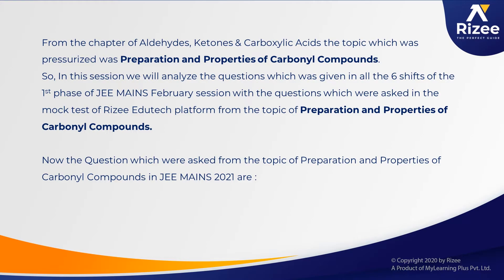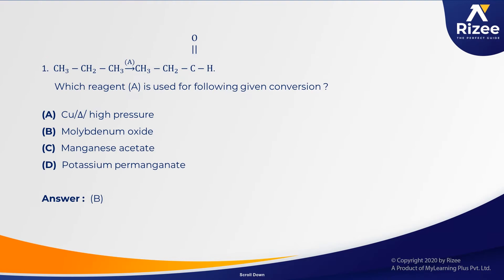Let's see the questions asked on Preparation and Properties of Carbonyl Compounds in JEE Mains 2021. The first one: the reactant is an alkane and the product is an aldehyde. It is an easy question and a linkage type question — related to Hydrocarbons and Aldehydes, Ketones and Carboxylic Acid. So it is a Preparation of Aldehyde topic.